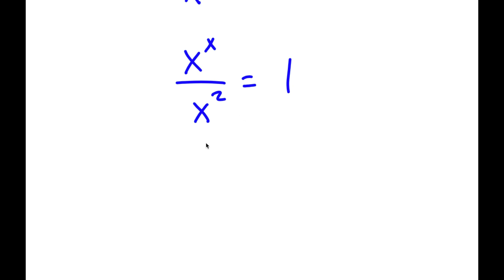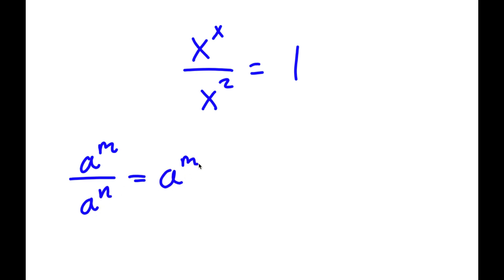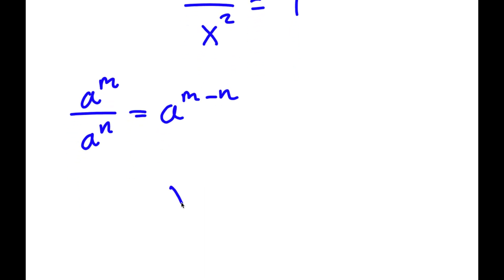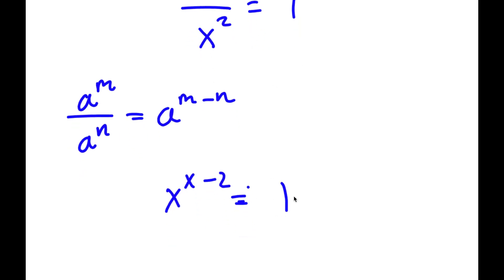Now, if I have something in the form a to the power of m over a to the power of n, this is equal to a to the power of m minus n. So x to the power of x over x to the power of 2 is going to equal x to the power of x minus 2. And now this is equal to 1.